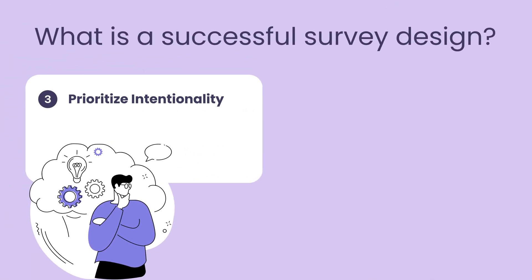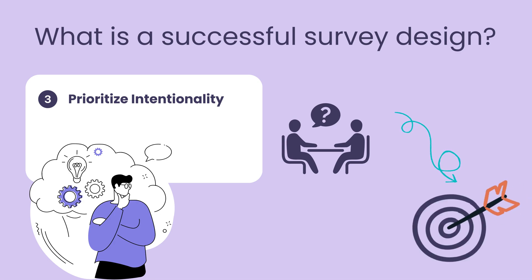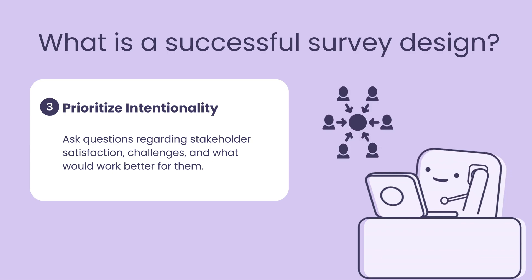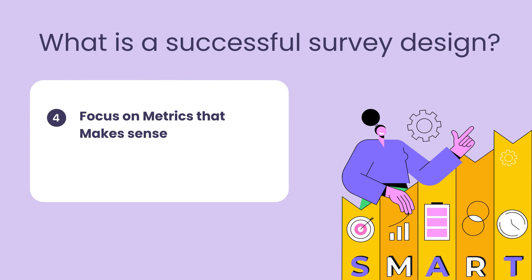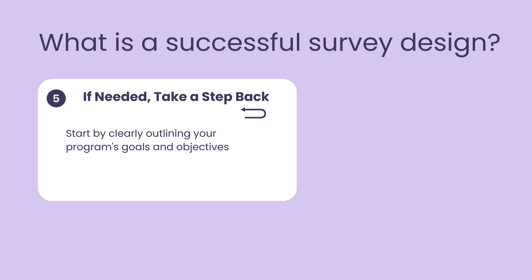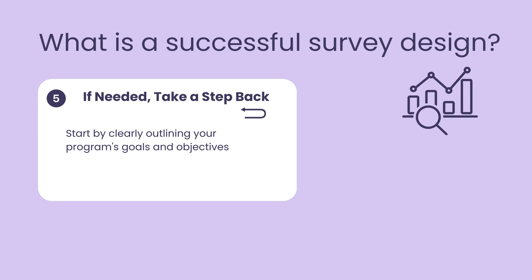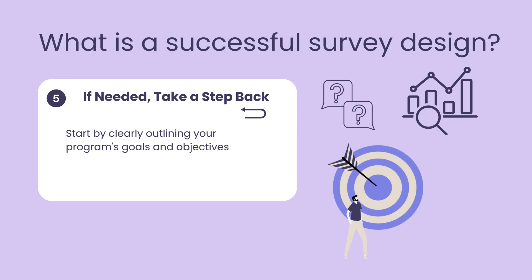Third, since the ability to analyze large amounts of data is limited, focus on what is important to you first. Ask questions directly linked to the program's objectives — for example, questions regarding stakeholder satisfaction, challenges, and what would work better for them. Ultimately, this insight will help you retain them in the program. Fourth, focus on metrics that make sense to your program. Each program, even if it looks the same, should be customized to meet the unique demands of the community. Finally, if needed, take a step back. Survey design can sometimes feel like navigating a labyrinth. Do not hesitate to re-evaluate your program's core goals once the first results arrive. This reflective pause allows you to reassess your metrics, refine your questions, and ensure that the survey results guide your program toward its intended impact.